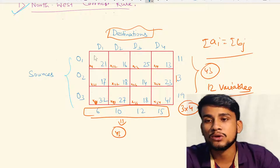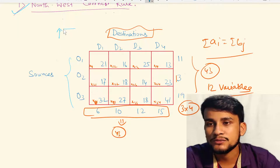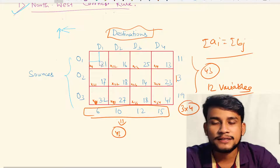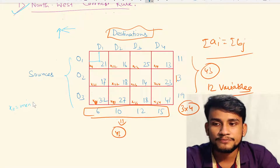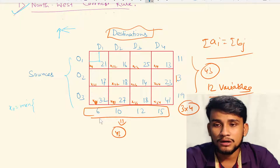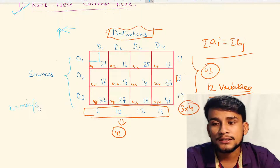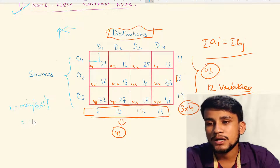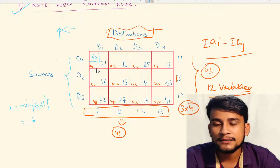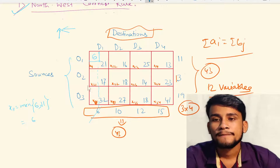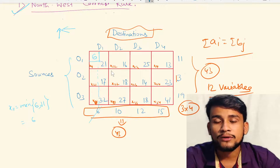The northwest corner method starts from the northmost and westmost cell. So first we allocate to cell x11. x11 = minimum(demand of D1, supply of O1) = minimum(6, 11) = 6. We allocate 6 here; the demand of D1 is now satisfied and completed. We move to the next northmost and westmost cell.